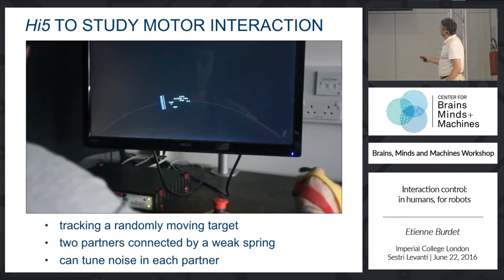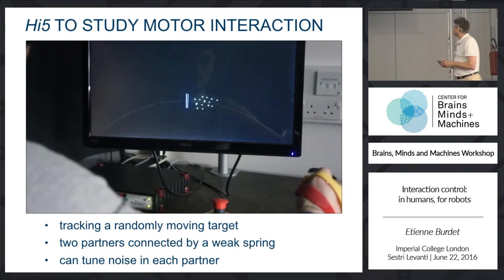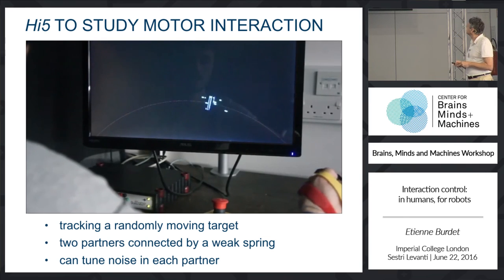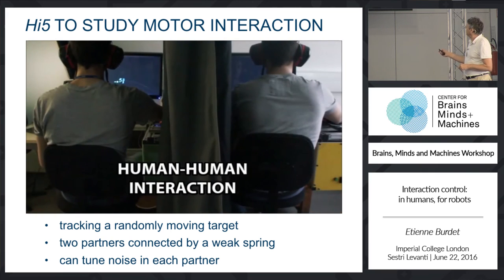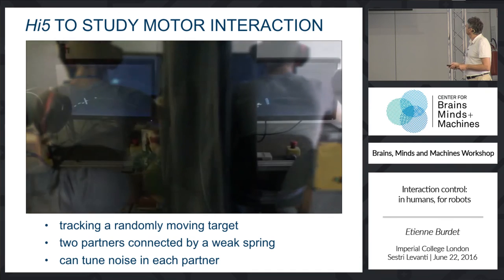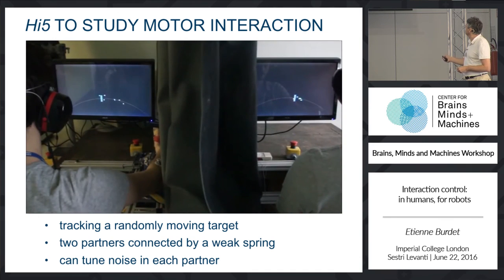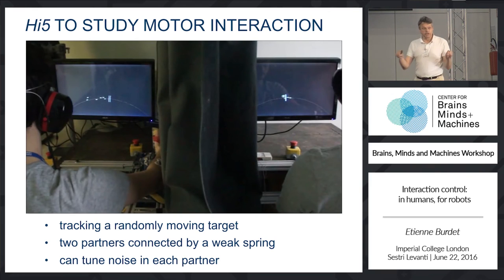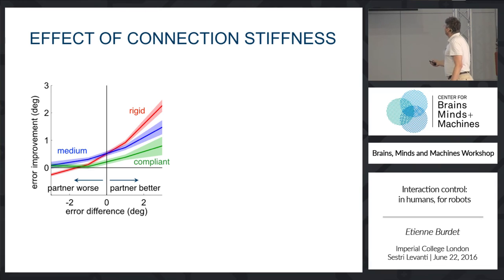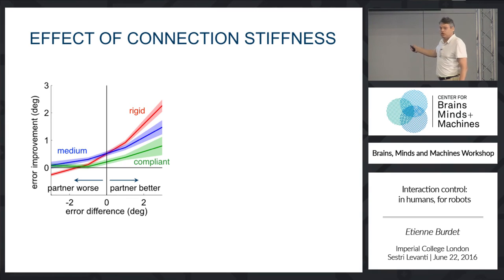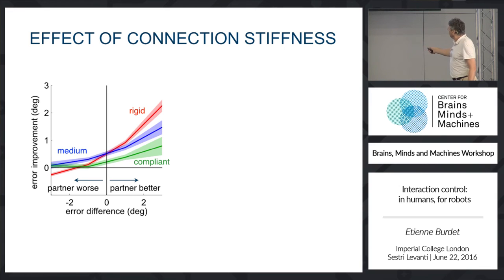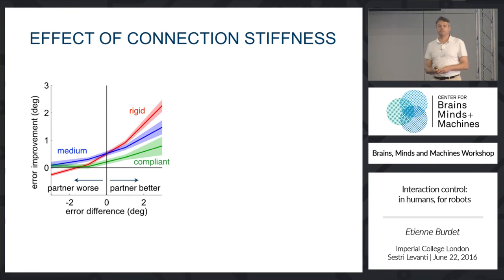The task is to follow a target in one dimension, with subjects connected by a spring. We find that with a rigid connection, you improve the most — but when the partner is bad, you have to follow them somewhat and cannot compensate perfectly. With a more compliant connection, you do not improve as much with the partner, but you can compensate perfectly for a bad interaction.